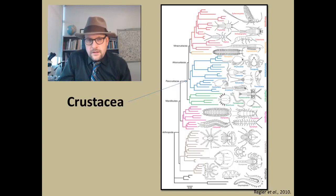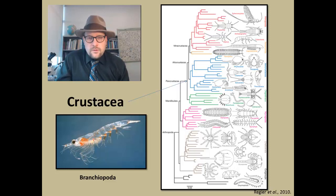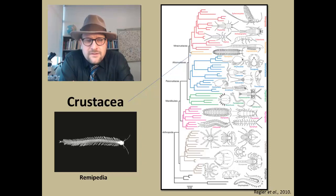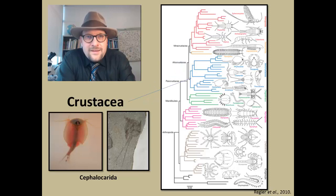These include things like the Branchiopoda—these are the brine shrimp. They include a really weird group, the Remipedia—these are blind crustaceans that look like centipedes that live underwater. Many of them are blind and live in caves. In some molecular phylogenies, they fall out as a sister group to the Hexapoda, which is interesting.